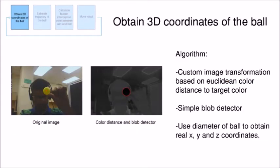To obtain the 3D coordinates of the ball, we devise a custom image transformation based on a Euclidean color distance to a target color, which is described in detail in the report. Finally, an algorithm extracts blobs based on size and shape. This gives us the x-y location of the ball as well as the diameter.